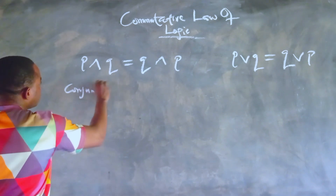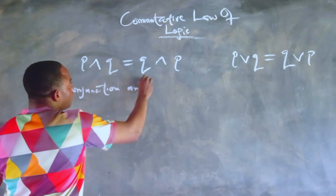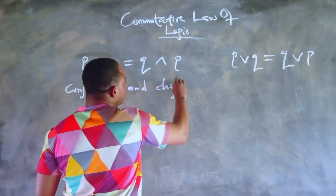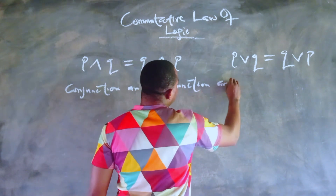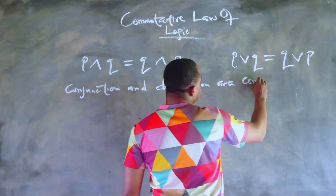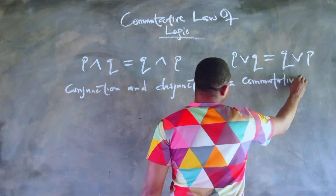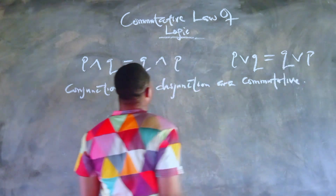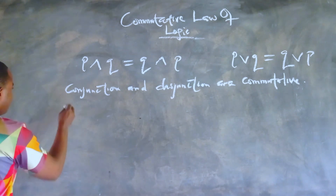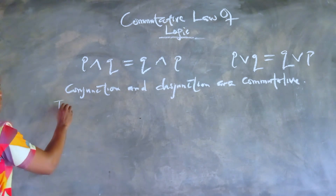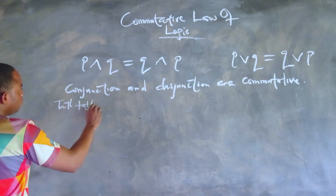Please remember to hit the like button if you get value from this lesson and subscribe for more educational content like this. This law simply implies that conjunction and disjunction are commutative, just like addition and multiplication in algebra are commutative.